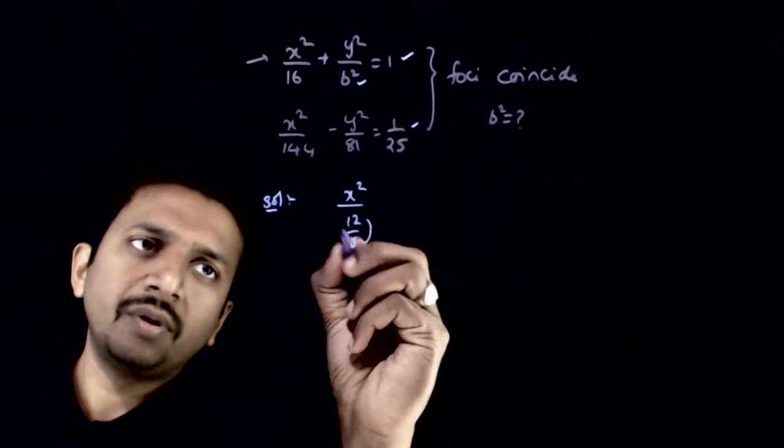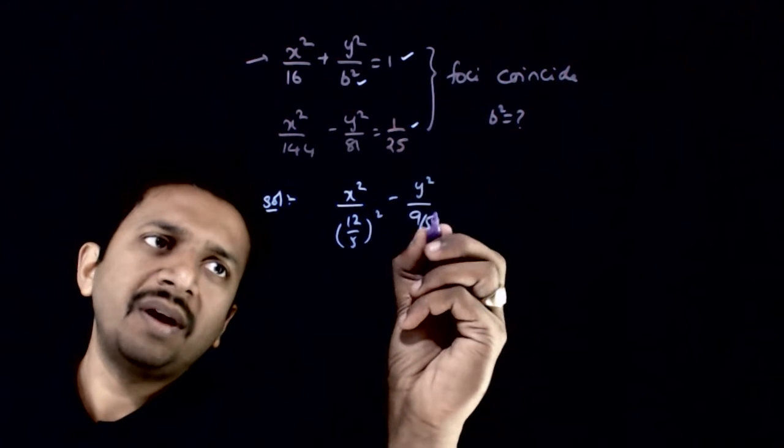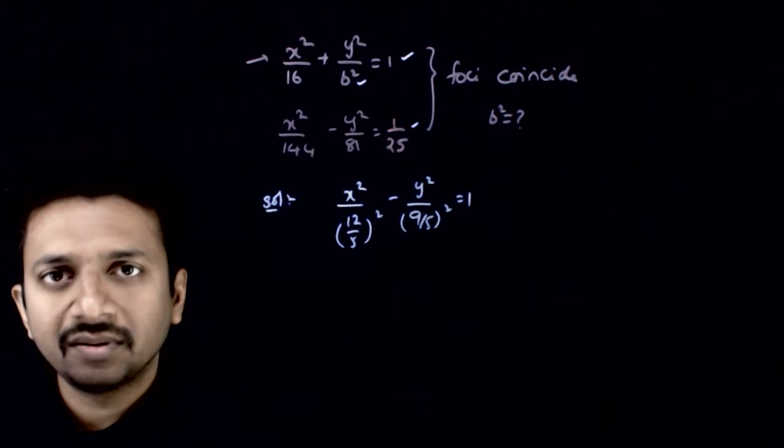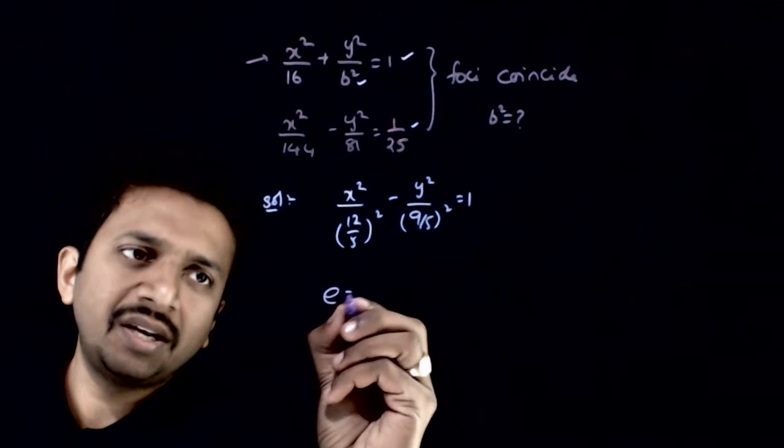So x² by (12/5)² minus y² by (9/5)² equals 1. This will be the standard form of this hyperbola. What is the eccentricity of this?